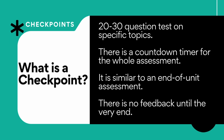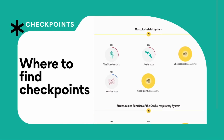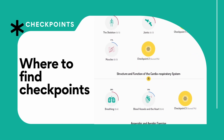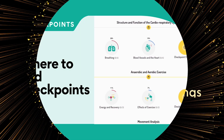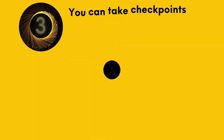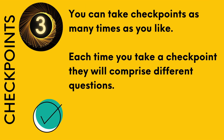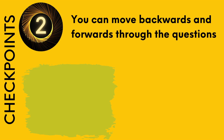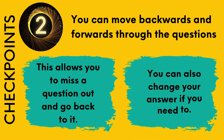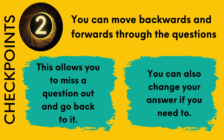Checkpoints are 20 to 30 question tests on specific topics. A countdown timer will run the whole time — it's a bit like an end of unit test. You get no feedback until the end. Find the checkpoints: they're the little yellow circles that say checkpoint one, checkpoint two, checkpoint three. You can take checkpoints as many times as you like and each time they are different, so keep on learning. You can move backwards and forwards through the questions, miss a question out and go back for it, and change your answer if you need to.